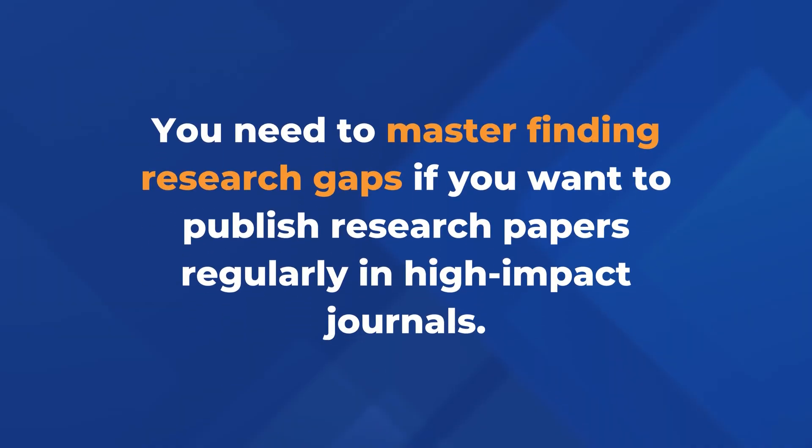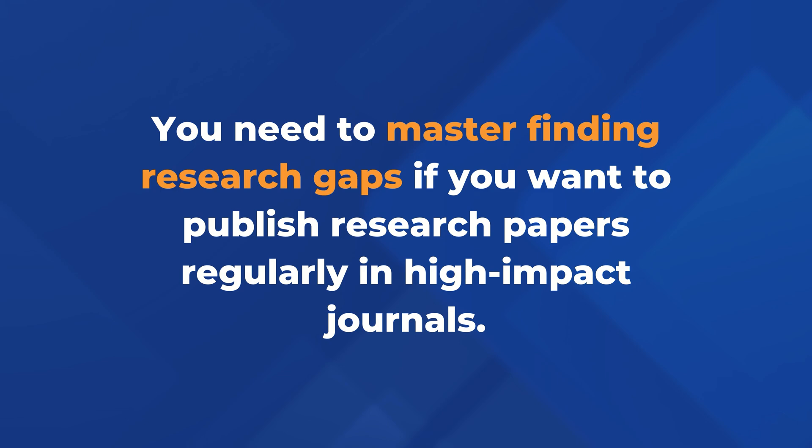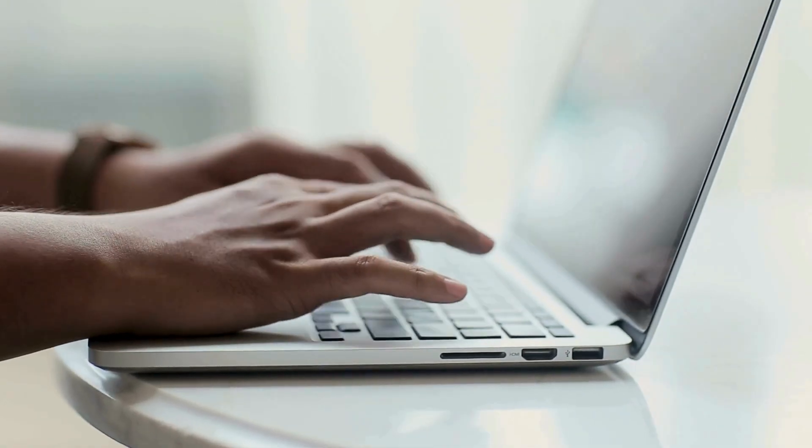If you want to publish research papers regularly in high impact journals, the skill you really need to master is finding research gaps — not just once, but on a regular basis so that every single year you've got three to five really solid research gaps giving you amazing research topics. Because no matter how good your writing is or what coherent story you tell, if you don't have an impactful research gap allowing your study to make novel contributions, your paper is never going to get published in a top Q1 Scopus Index journal.